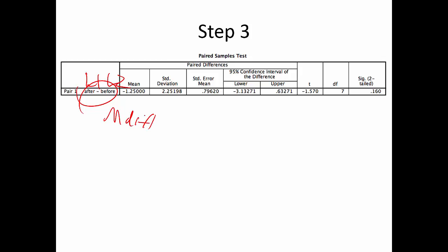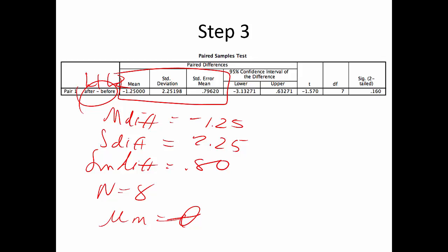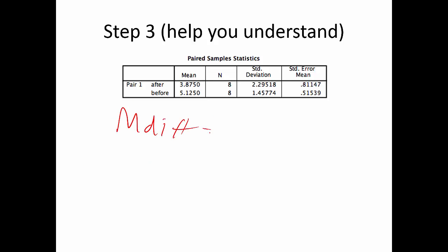Step three: label the mean difference (-1.25), the standard deviation of the differences (2.25) for Cohen's d, the standard error of the differences (0.80), and N = 8. We assume mu is zero. If you don't know what a negative mean difference of -1.25 means, look at the group means: after is less than before. A negative number is what we want for a less-than test. We're testing whether this negative number is statistically less than zero.